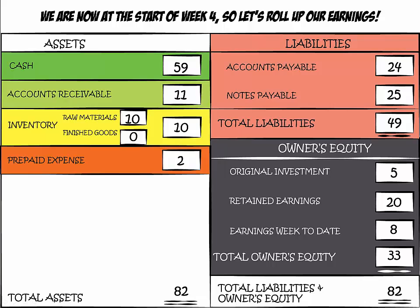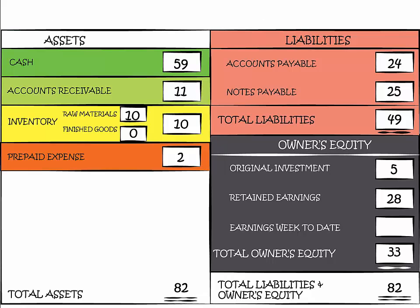Here is the ending balance sheet of Week 3. Since we are at the start of Week 4, we'll turn this into a beginning balance sheet for Week 4 by rolling up our earnings week-to-date of $8 and adding them to our retained earnings of $20. Our beginning balance sheet for Week 4 shows retained earnings of $28.